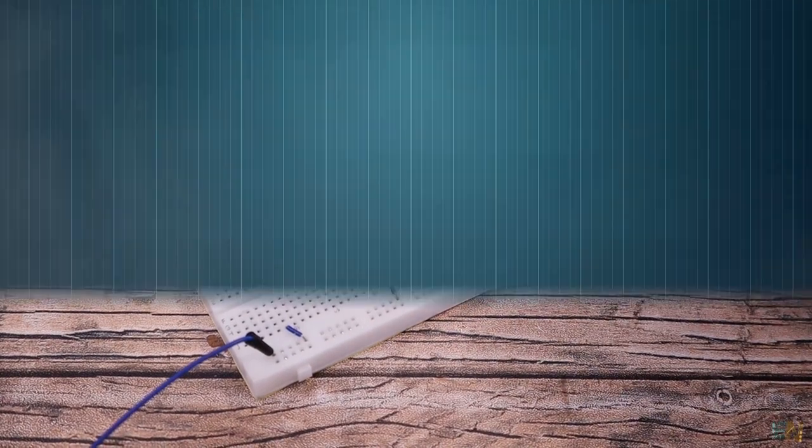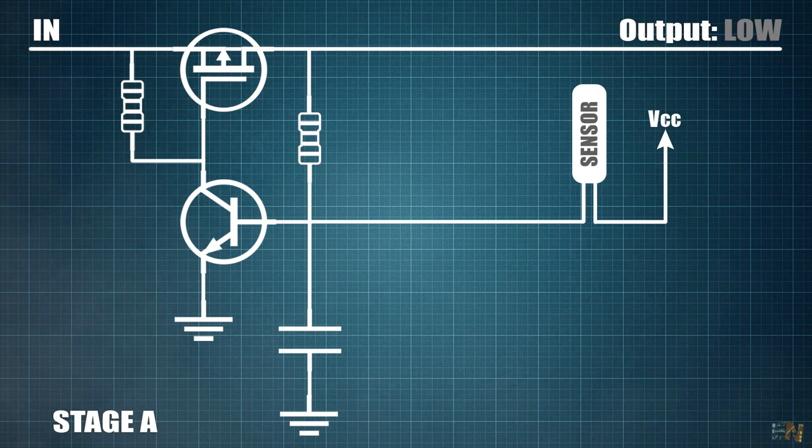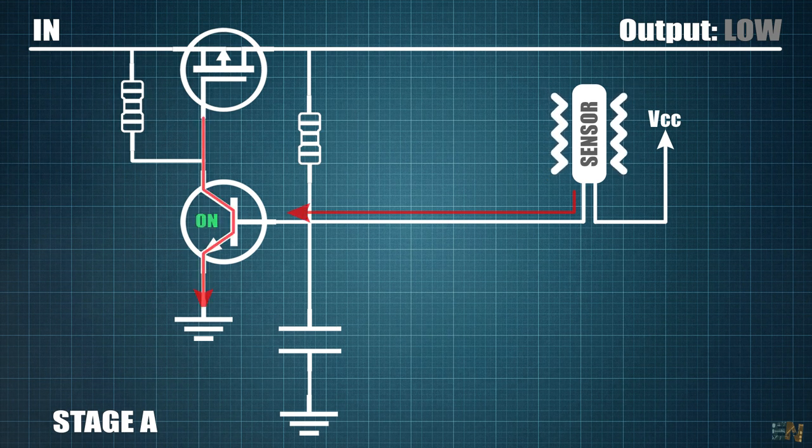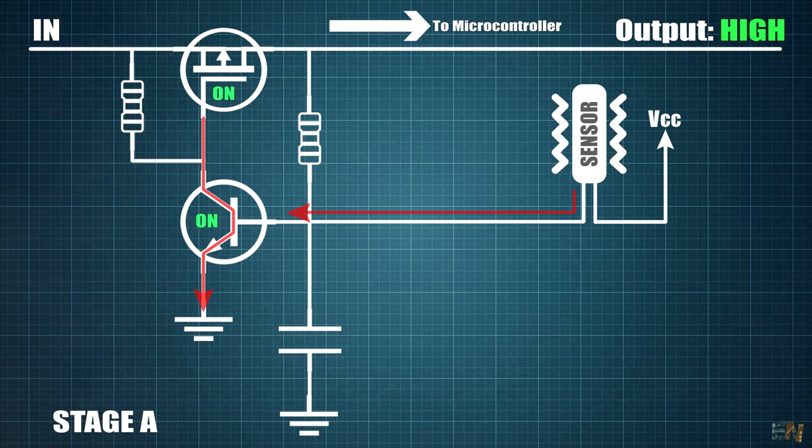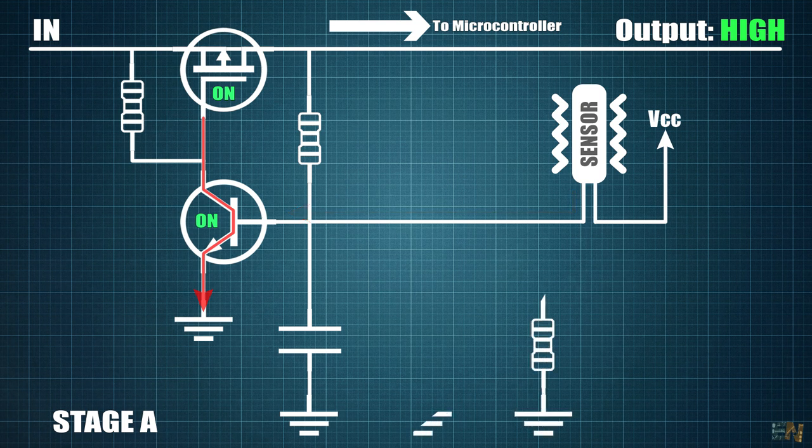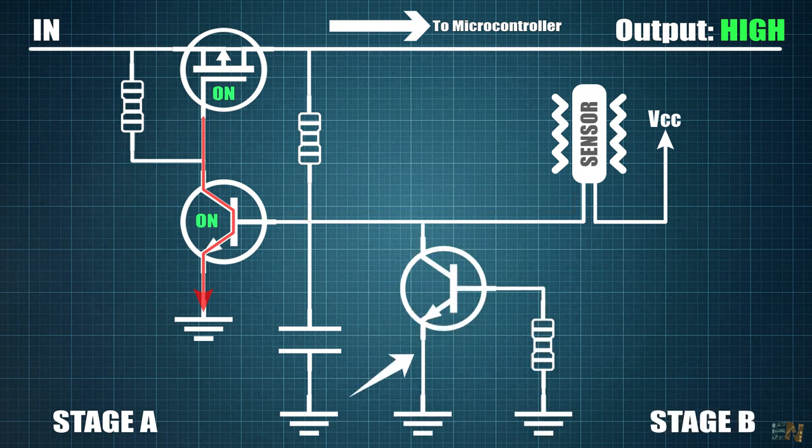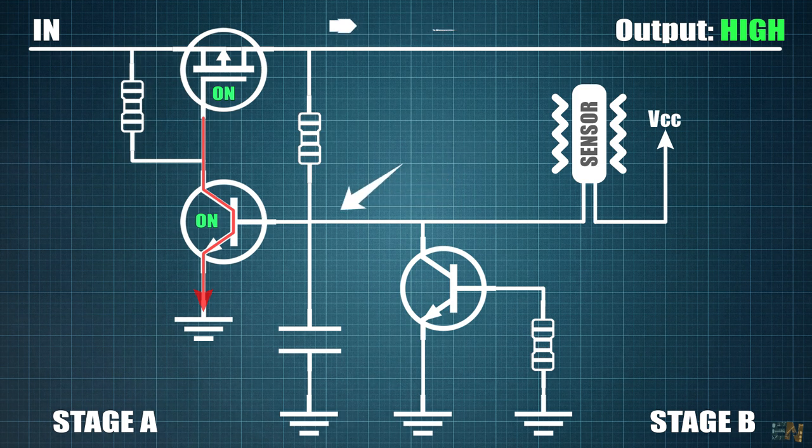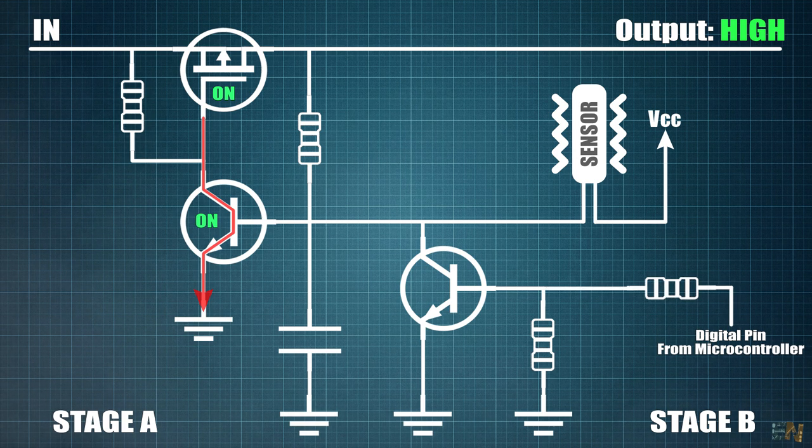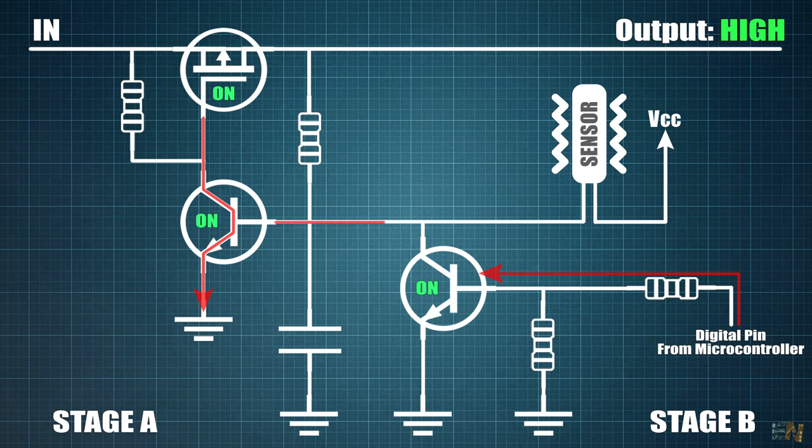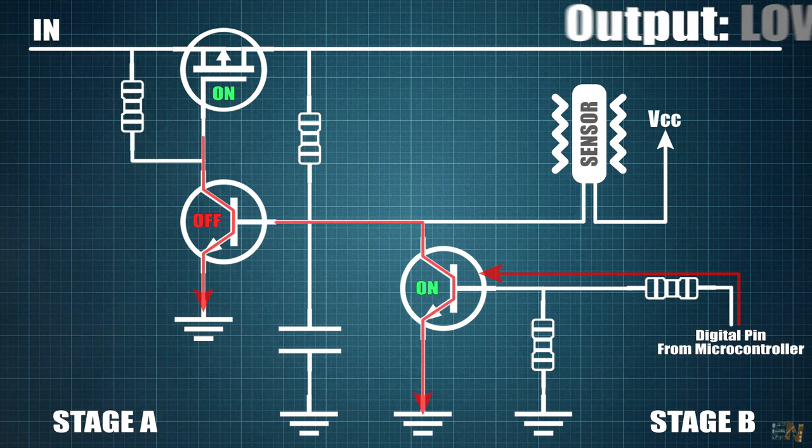For that I propose something like this. We start with the same first stage as before. The high pulse from the door detector will turn ON the first BJT transistor so now we can supply the microcontroller. Now I add a second BJT transistor that has the emitter to ground and the collector to the base of the first BJT. From the microcontroller I connect a digital pin to the base of the second BJT that already has a pull down. Now when I apply high pulse from the microcontroller to the second BJT, it will pull down the base of the first one and by that it will turn OFF the entire circuit.